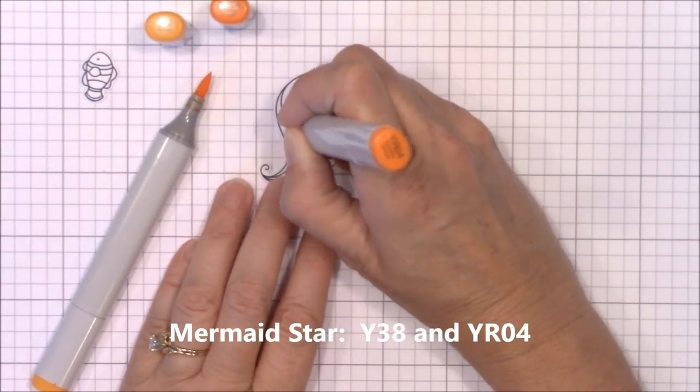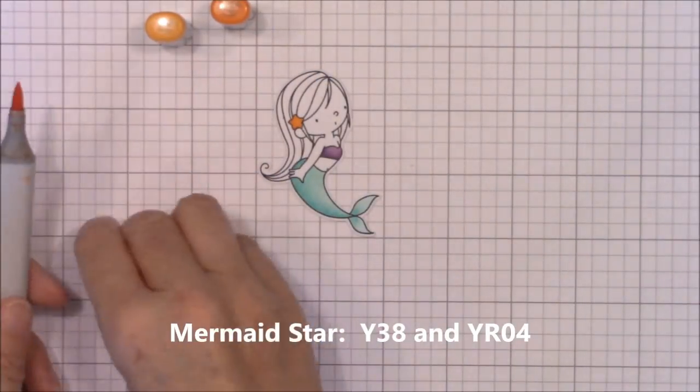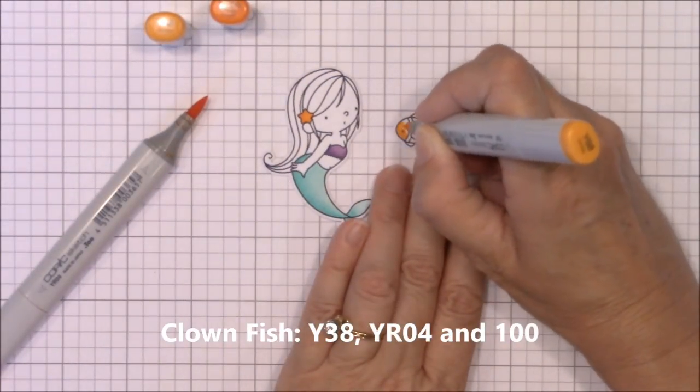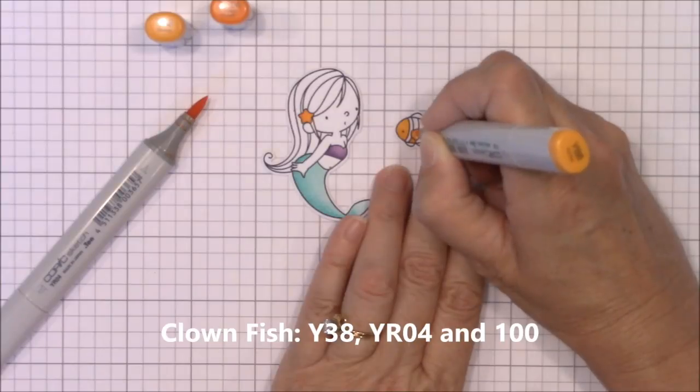Her skin was colored with E00, E00, and R20. That's what gives her those rosy cheeks.